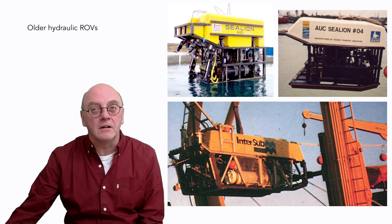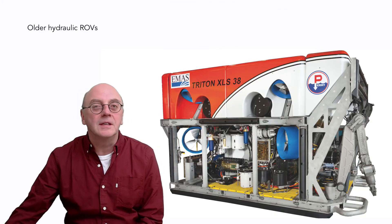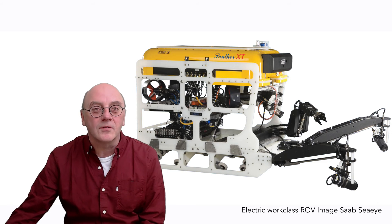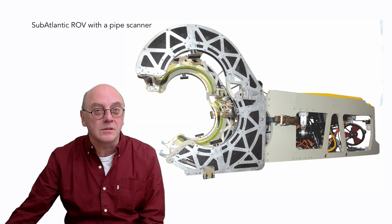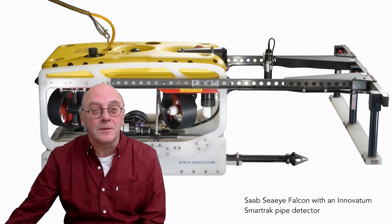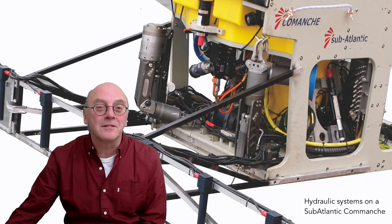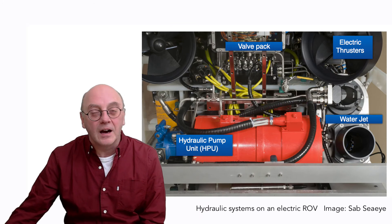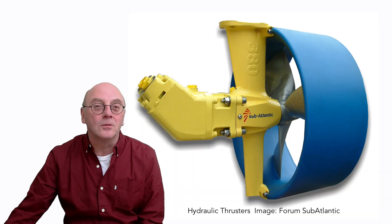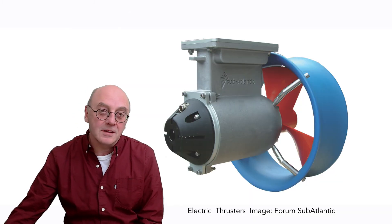At one time all work class ROVs were hydraulic and they could do 90% of subsea intervention work. But not anymore — electric ROVs are cheaper and take up less deck space. Companies started adding more and more tools to electric ROVs to increase their capabilities and compete with hydraulic vehicles, which meant adding hydraulic circuits to electric ROVs, and the boundaries started blurring. Having a hydraulic circuit on an electric ROV doesn't make it a hydraulic ROV — it's all to do with propulsion. If the ROV has hydraulic thrusters, it's hydraulic; if it has electric thrusters, it's electric.